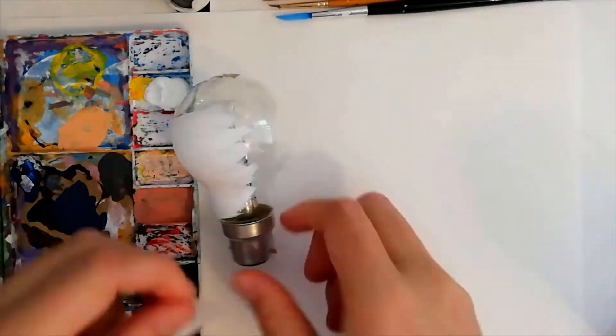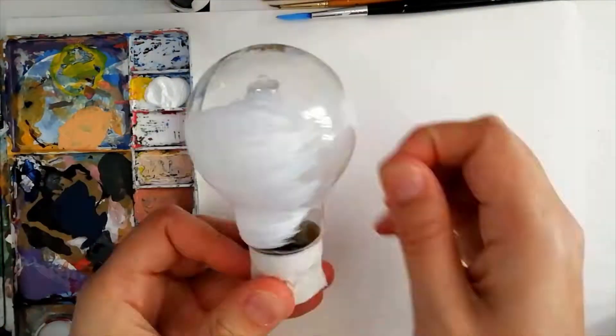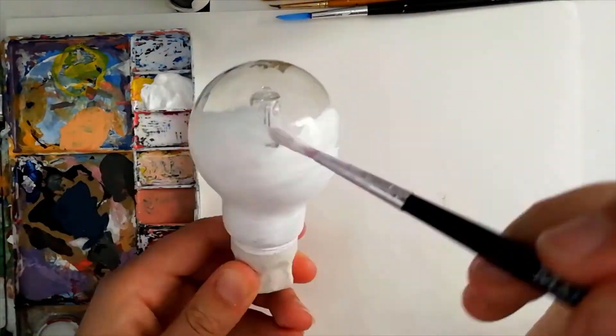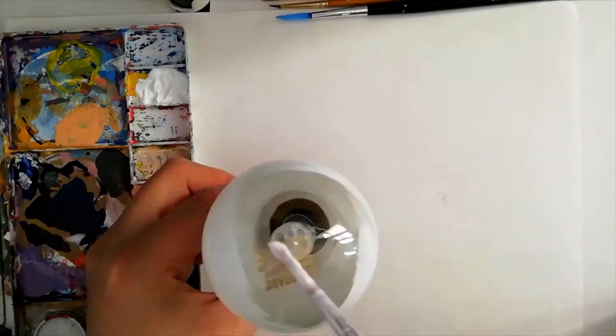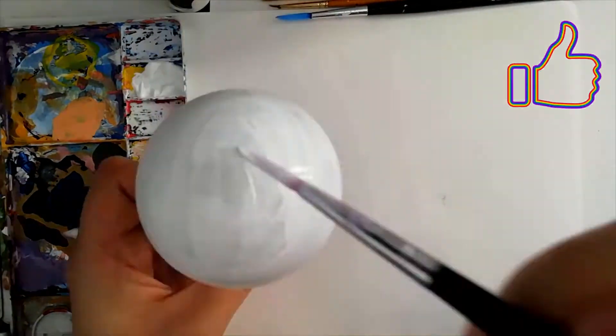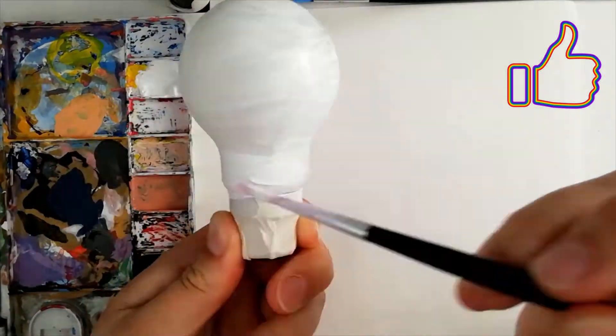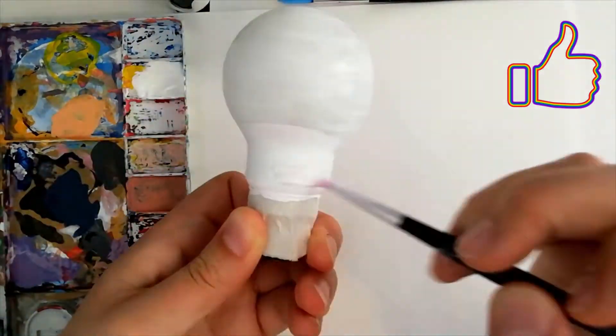Hi everyone, it's Eleanor from Art with Eleanor, and today I'm going to be showing you how to paint pink clouds on a light bulb. But before we get into the video, if you could like and subscribe I'd really appreciate it, and without further ado let's get into it.